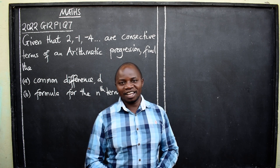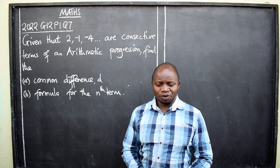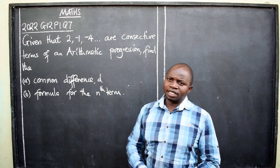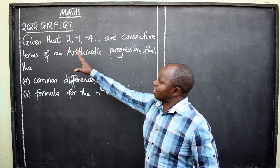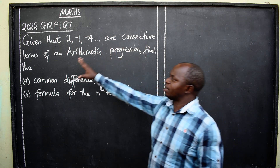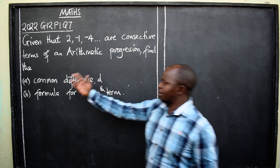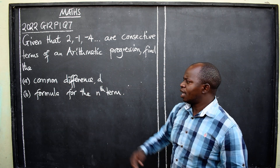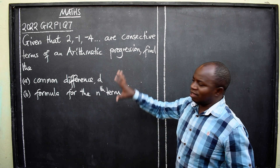Let's look at this question that came in 2022 Grade 12 Paper One, Question Seven. This is mathematics. Given that two, negative one, negative four are consecutive terms of an arithmetic progression, find the common difference d, and the formula for the nth term.